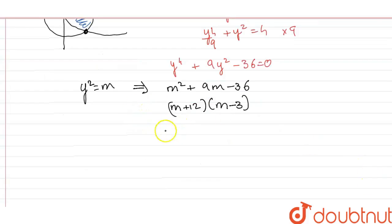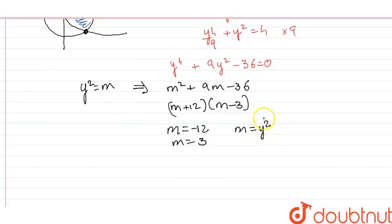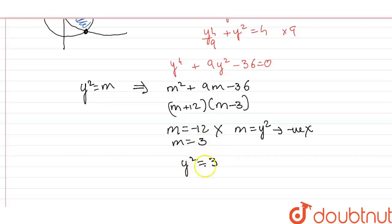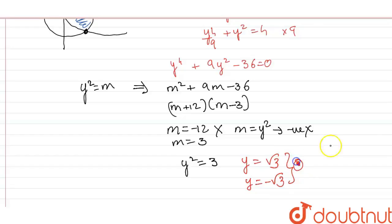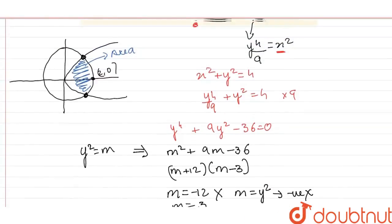The roots are m = −12 and m = 3. Since m = y², it cannot be negative, so we reject m = −12. Therefore y² = 3, giving y = √3 or y = −√3. These are the two intersection points in terms of y.